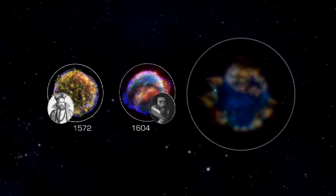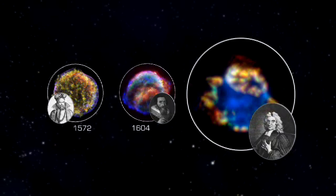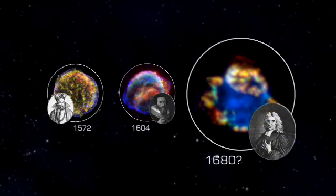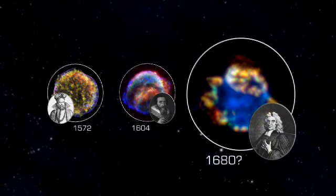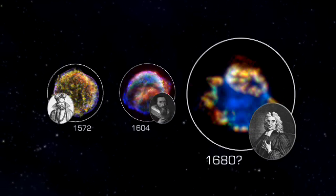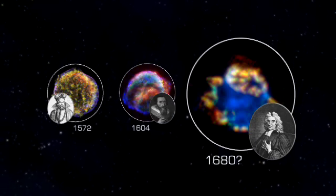Interestingly, the Royal astronomer Flamsteed noted a star near Cass A in August of 1680 with a brightness consistent with a Type IIb supernova at that distance. So maybe it was seen after all.